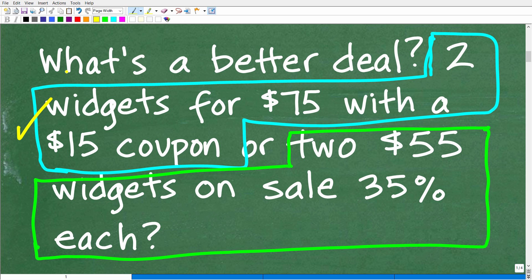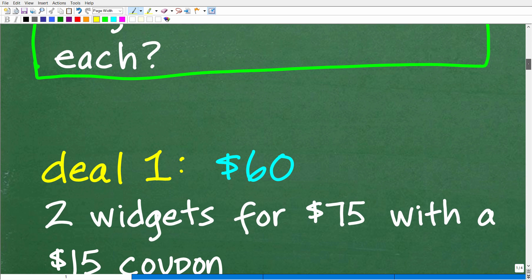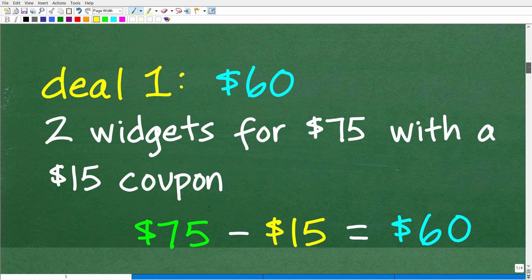So let's go ahead and take on this first deal. This is pretty straightforward. Two widgets for $75 with a $15 coupon. Let's call this deal one.